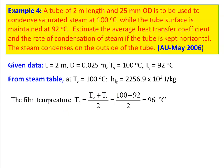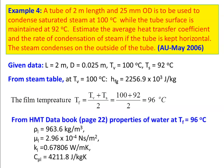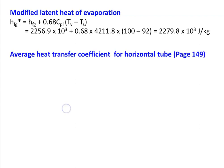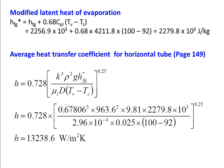The film temperature is (100 + 92) / 2 = 96°C. At 96°C, from the data book page 22, the properties of water are: density ρ = 963.6 kg/m³, μ = 2.96 × 10⁻⁴ N·s/m², thermal conductivity K = 0.67806 W/m·K, and specific heat CPL = 4211.8 J/kg·K. The modified latent heat of evaporation HFG* = 2279.8 × 10³ J/kg. For a horizontal tube, we use page 149, equation number 2 for horizontal tube.